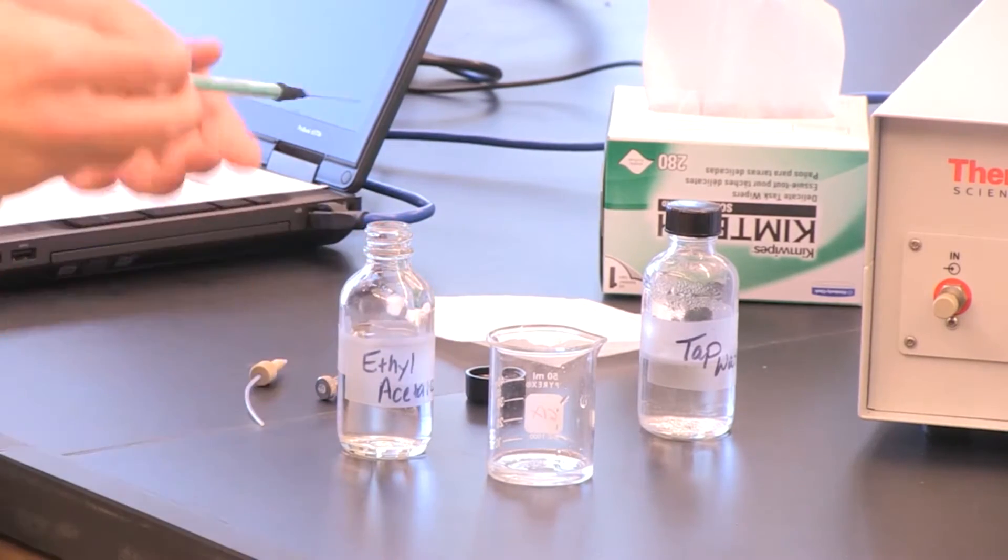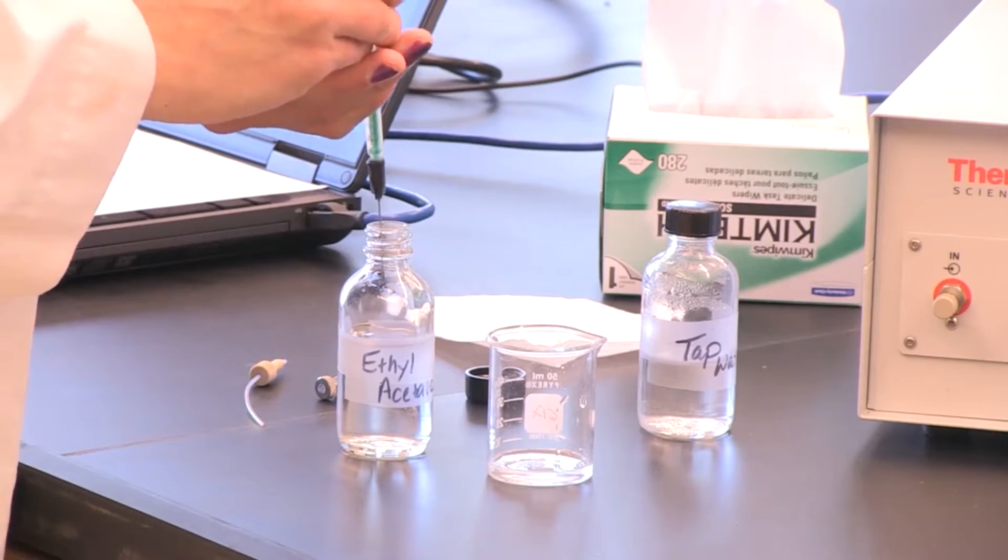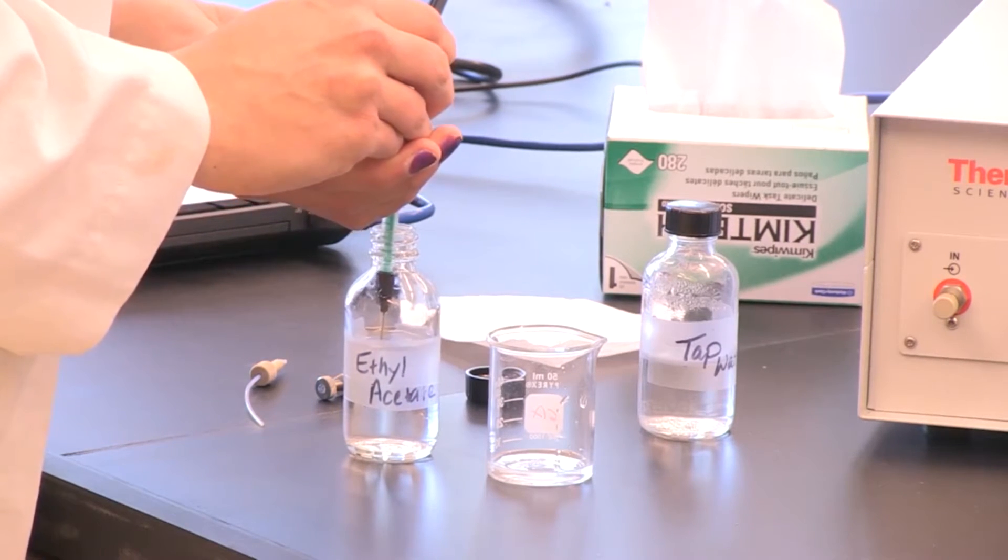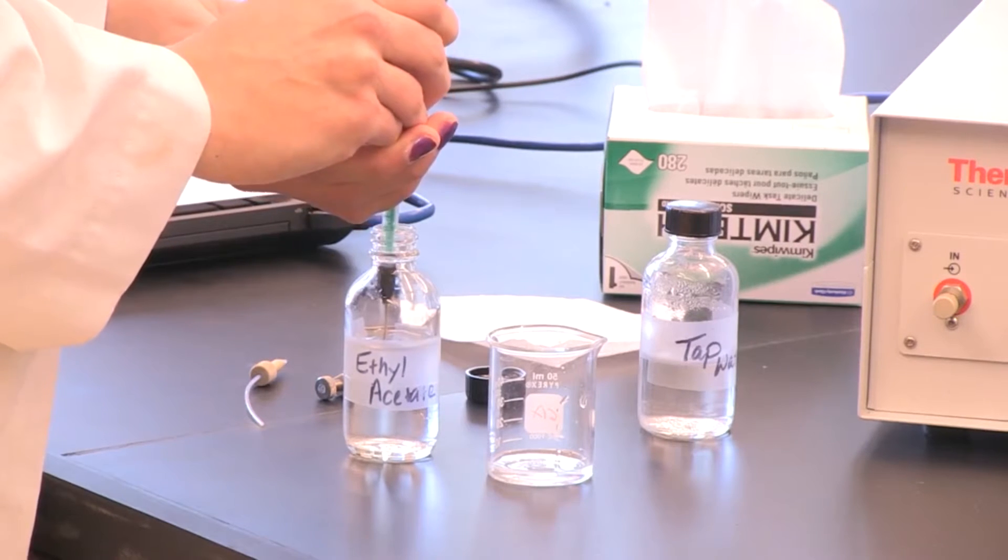Now we're going to draw our sample into our syringe, and this is what we're actually going to inject into the instrument. So again, I'm going to pull in about 0.1 to 0.2 milliliters.